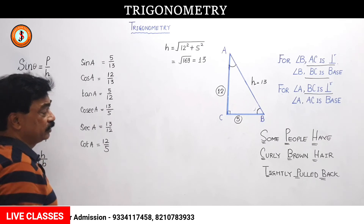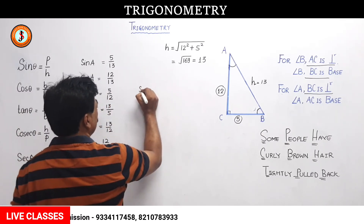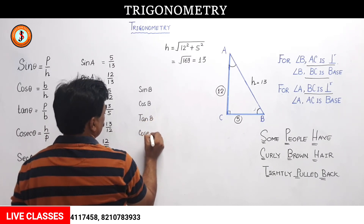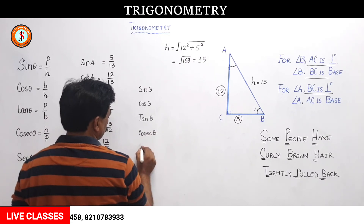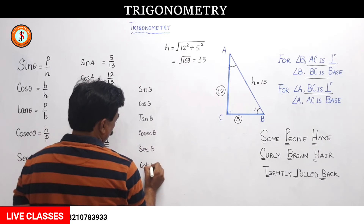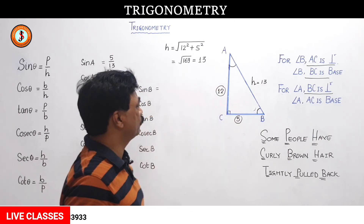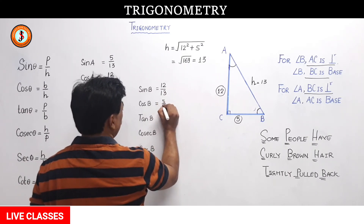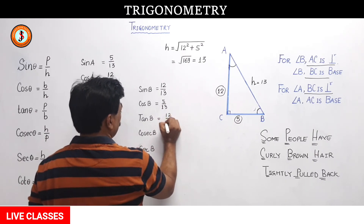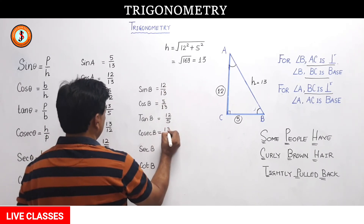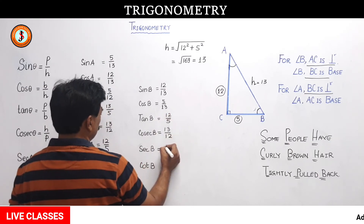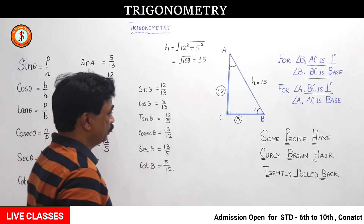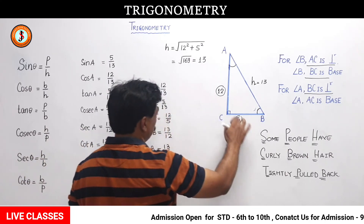Now for angle B: sin B — perpendicular is the side in front of angle B — so it is 12 by 13. Cos B — base — so it is 5 by 13. Tan B — perpendicular by base — so it is 12 by 5. Cosec B is opposite of sin B, so 13 by 12. Sec B is opposite of cos B, so 13 by 5. Cot B is base by perpendicular, so it is 5 by 12.